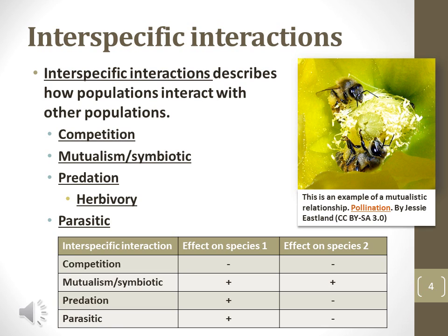Competition will hurt both species, while mutualism or symbiotic interactions will benefit both species. An example of a mutualistic relationship is bees pollinating flowers, while the bees get to collect pollen for honey.